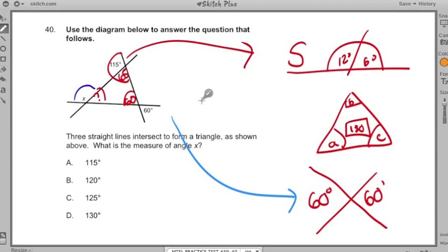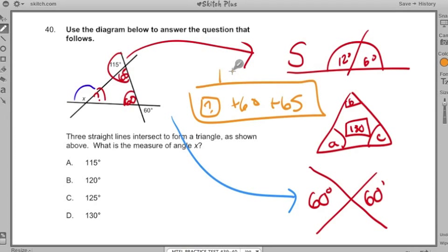Something plus 60 plus 65 all has to add up to 180. What would that be? That's something right there. Wouldn't that be 55 degrees? There's a whole bunch of different ways you could get that.